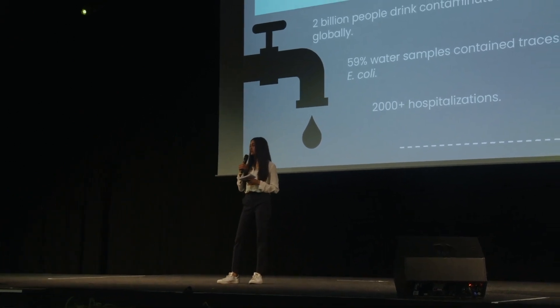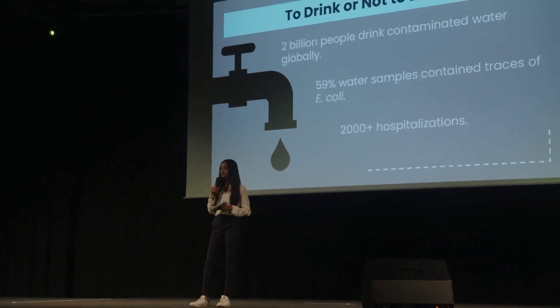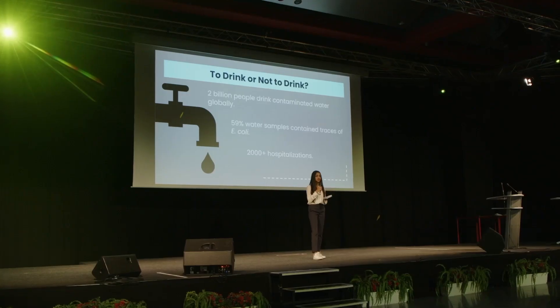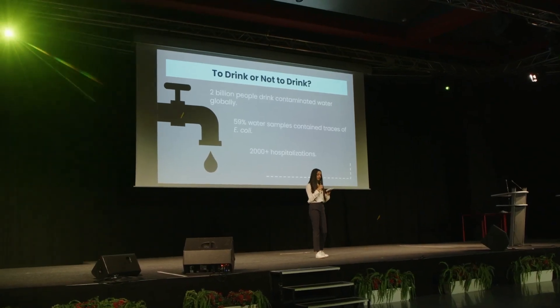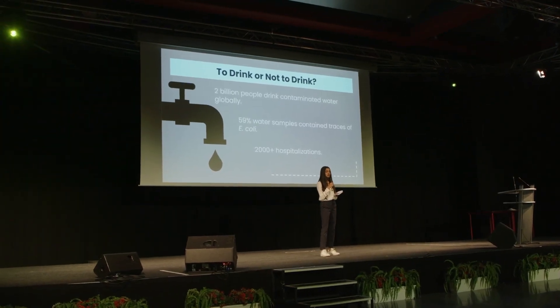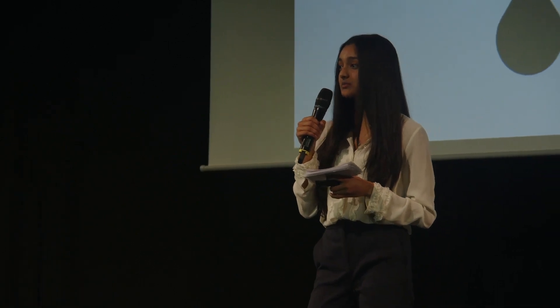This, however, is not the case for many people around the world — over 2 billion of whom do not have access to safe drinking water. A study found that 59% of water samples taken from Bangladesh contain traces of pathogenic E. coli. E. coli is a gram-negative bacteria which secretes Shiga toxins that may cause neurological complications and acute liver failure, resulting in over 2,000 hospitalizations in the US alone.